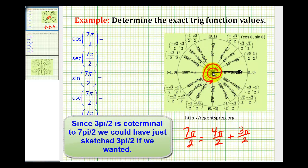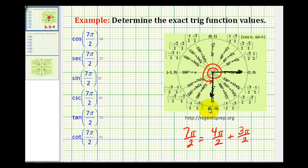This is the terminal side of our angle. Notice that the x-coordinate is 0 and the y-coordinate is -1, which tells us that cosine equals 0 and sine equals -1.